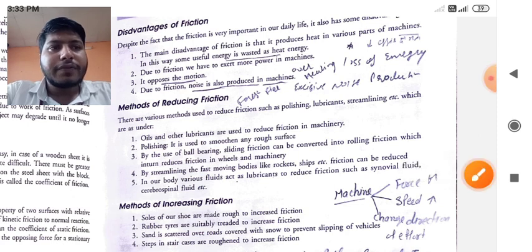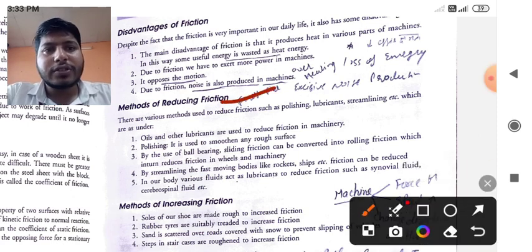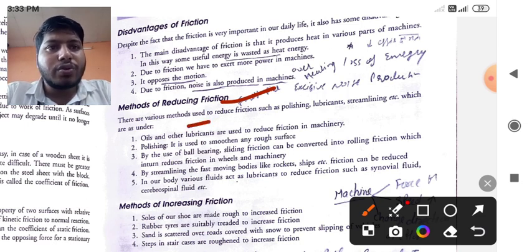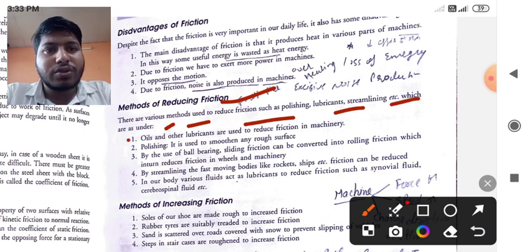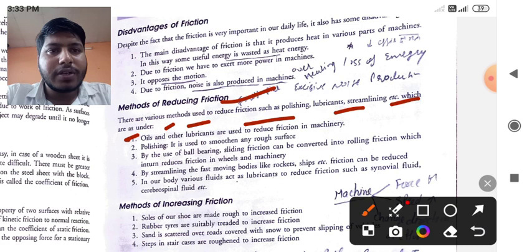The methods of reducing friction is, there are various methods used to reduce friction such as polishing, lubricating, streamlining, etc which are under use. First one is, oils and other lubricants are used to reduce friction in machinery.